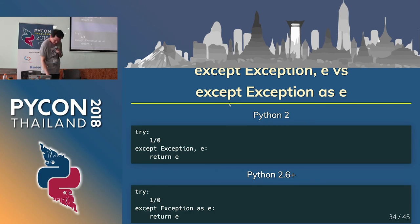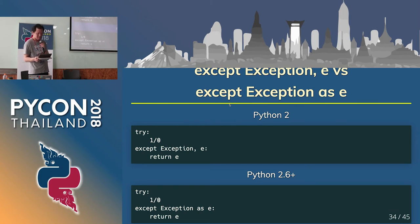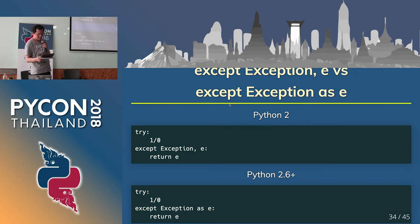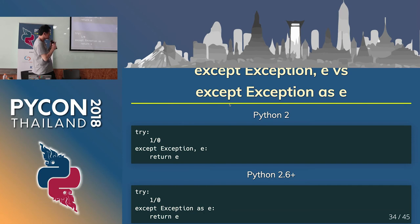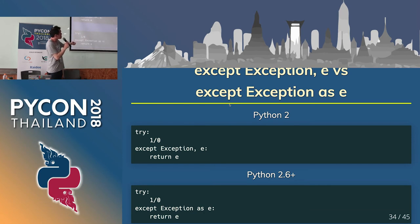Next, exception syntax. I think this change confuses many Pythonists. It is an important change. In the old style, you write: except ExceptionType, e — using a comma. Please switch to the new bottom syntax: except ExceptionType as e. This style started from Python 2.6, and it is now the normal way.